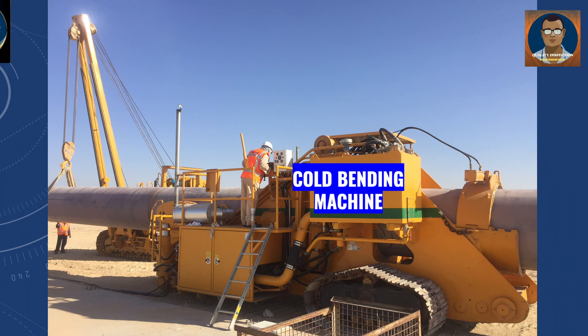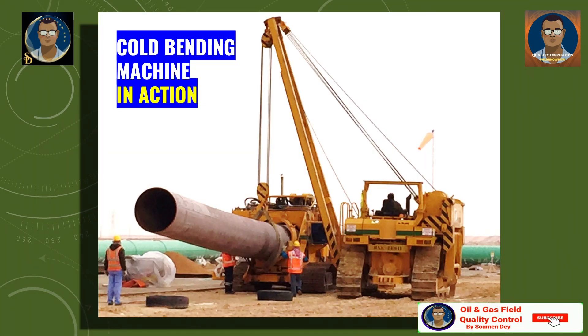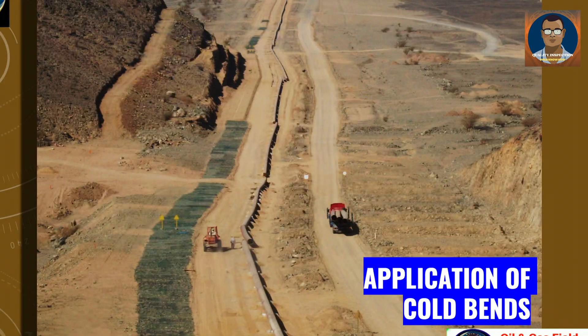You can see a typical cold bending machine and pipe bending in action from one of my previous projects, which is a 48-inch diameter internally coated pipe — so larger diameter pipe we are also bending through cold bending. Here you have seen the bent pipe already strung over the pipeline. This overview shows we are using cold preformed bends. It is a hilly terrain, so we need horizontal bends and overbend segments as well.